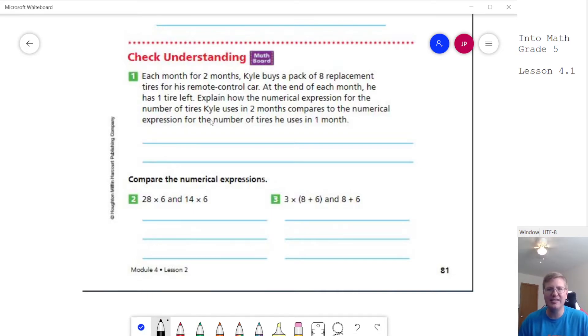Each month for two months, Kyle buys a pack of eight replacement tires for his remote control car. At the end of each month, he has one tire left. So that means we're going to use seven tires. Explain how the numerical expression compares for two months compared to one month.